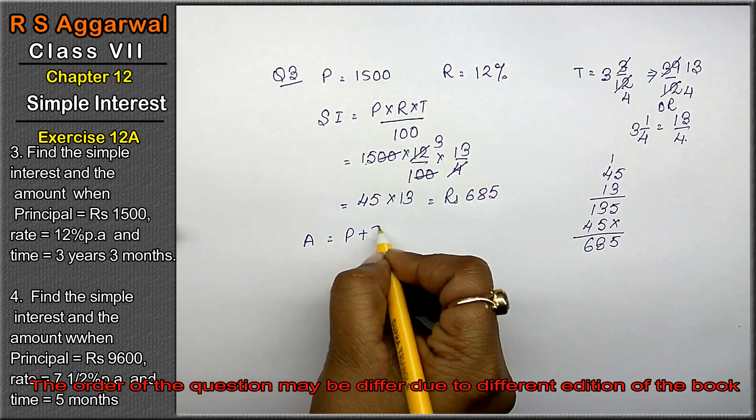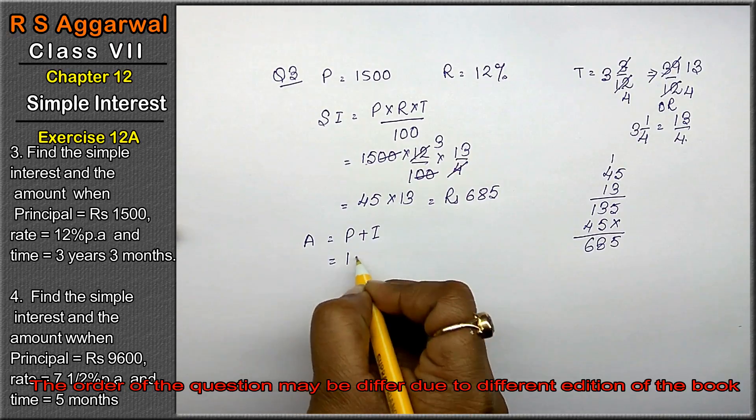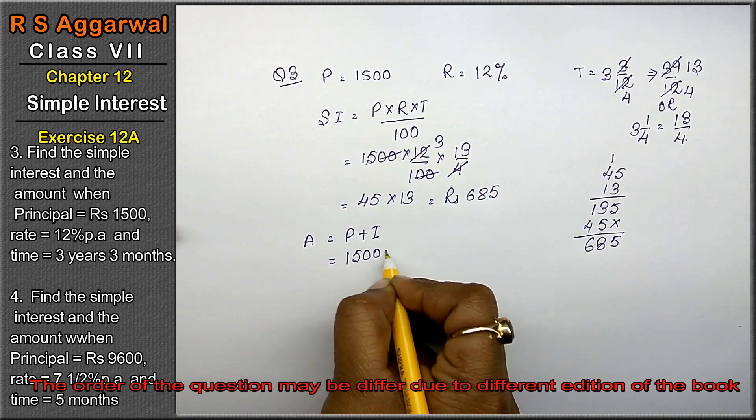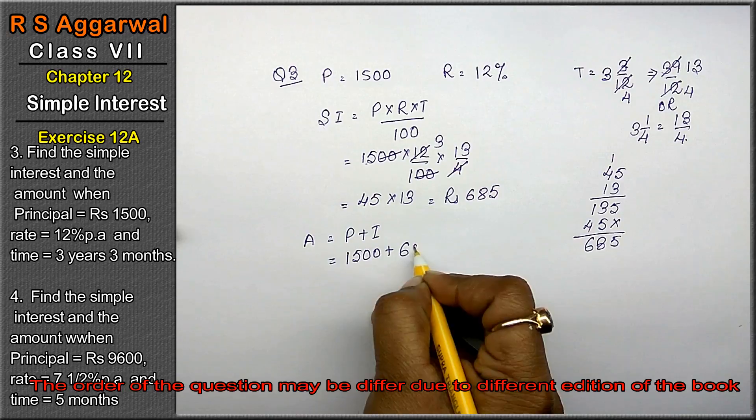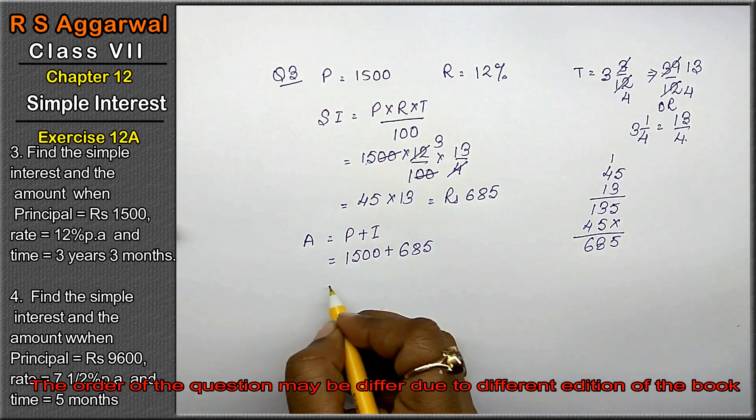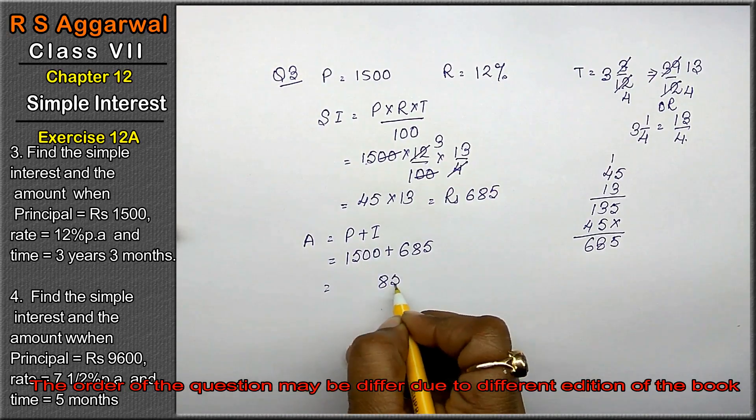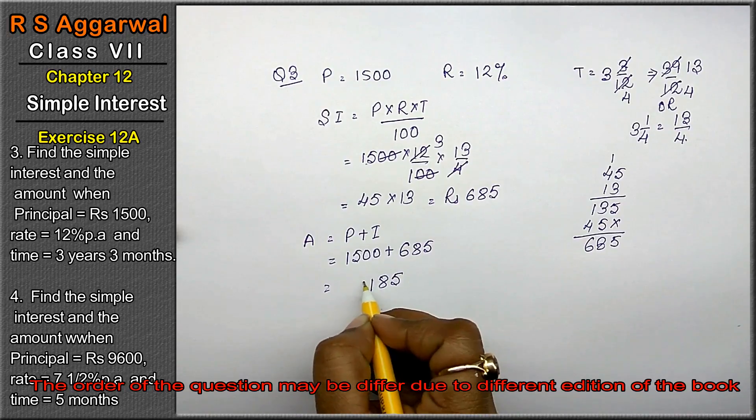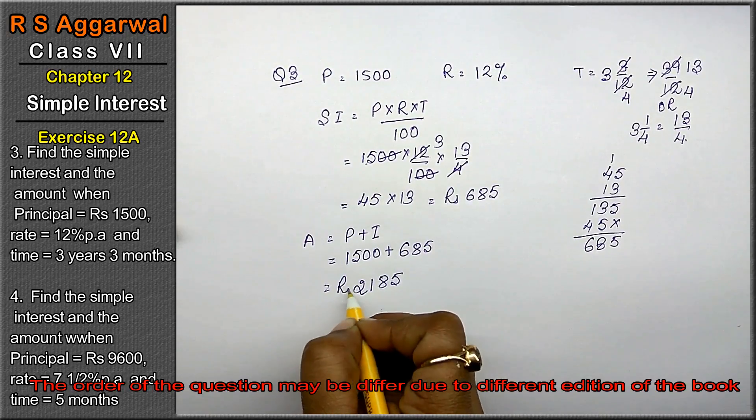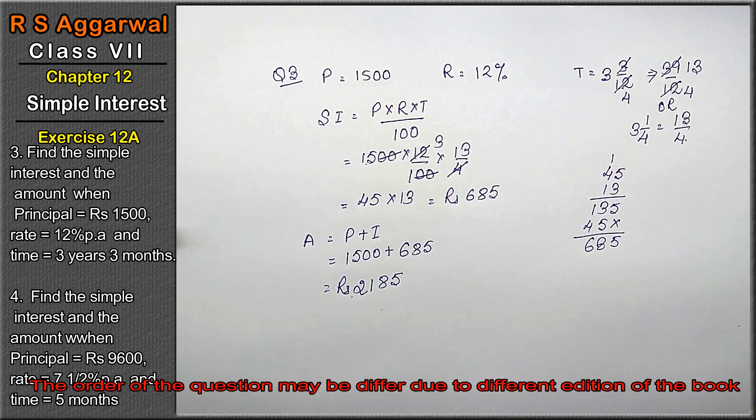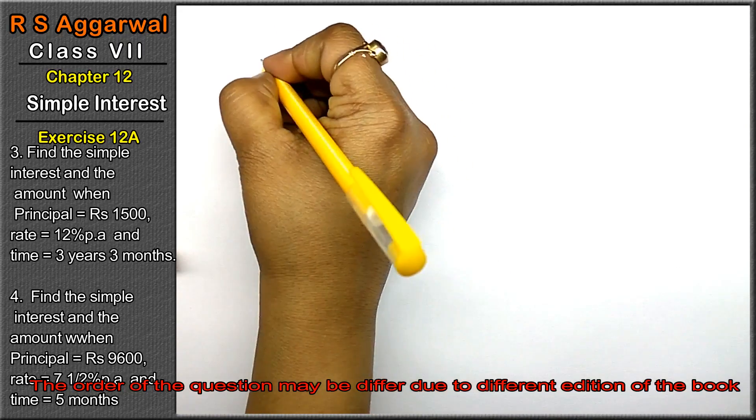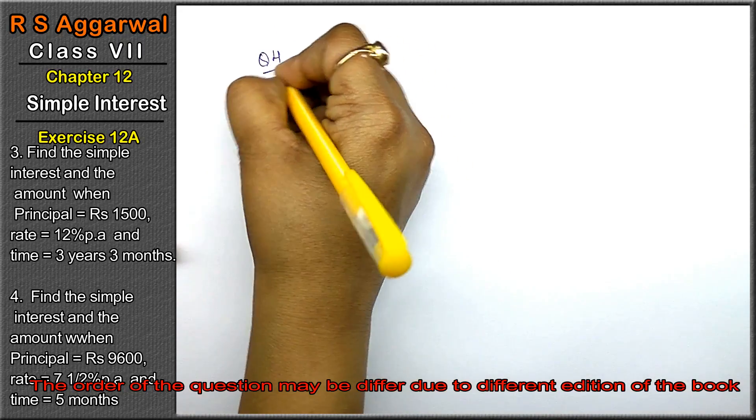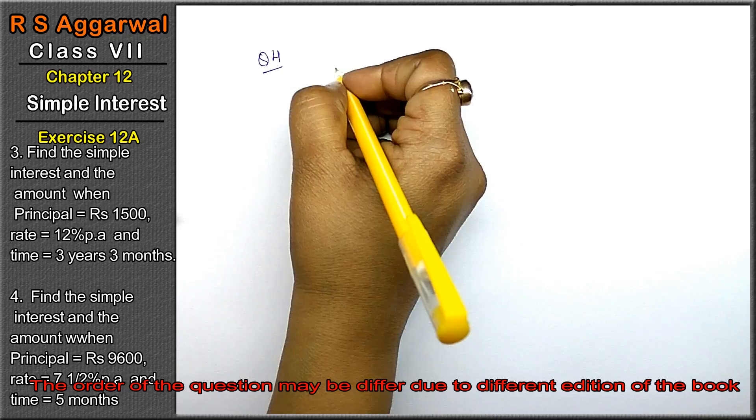Now amount: Amount formula is P plus I. P is 1500, I is 585. Adding gives 2185 as the answer.